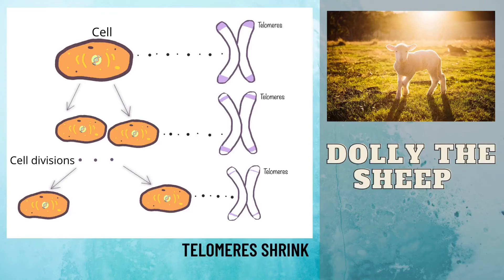Dolly the sheep had shorter chromosomes than average, as she was cloned from the cell of a six-year-old sheep. Dolly died at the age of six, which is half the lifespan of an average sheep.